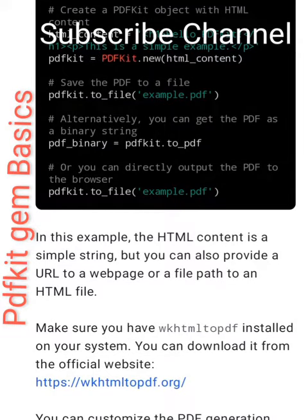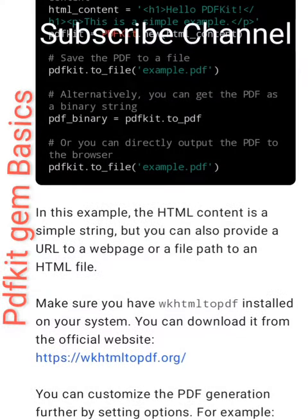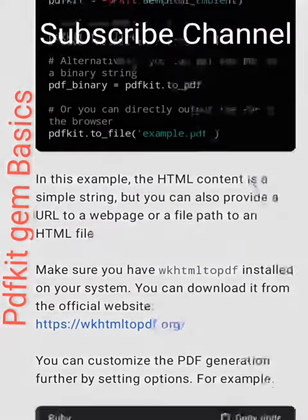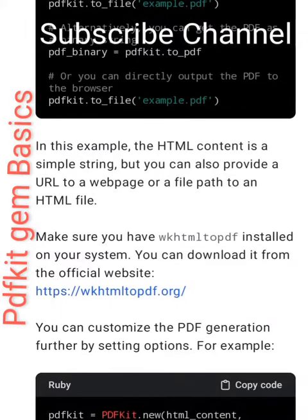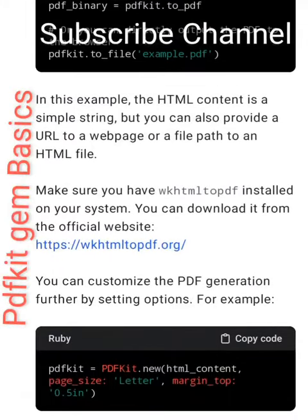Save the PDF to a file using pdfkit.to_file('example.pdf'). Alternatively, you can get the PDF as a binary string with pdf_binary equals pdfkit.to_pdf, or you can directly output the PDF to the browser.